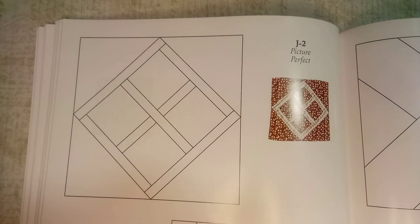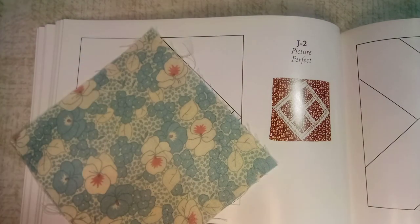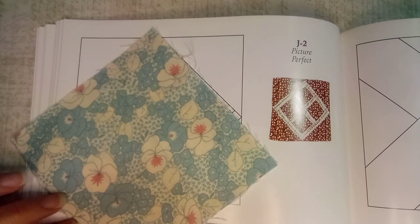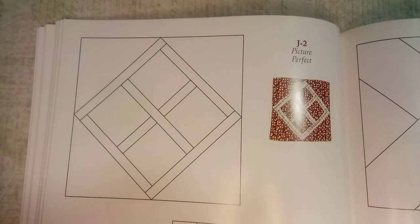Welcome back! Today's block from the Dear Jane quilt book is J2, also called Picture Perfect. For my focus fabric, I'm using this blue floral fabric, and for my background, I'm using this muslin. This block is pretty simple; it's just a matter of getting our measurements correct.